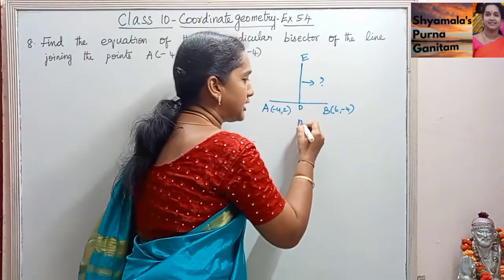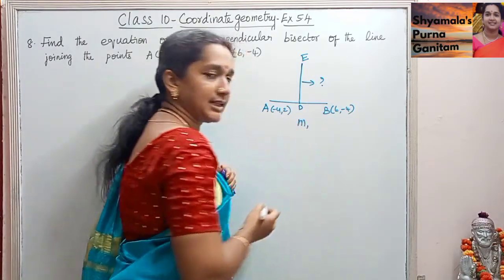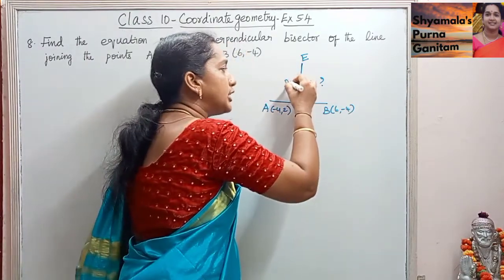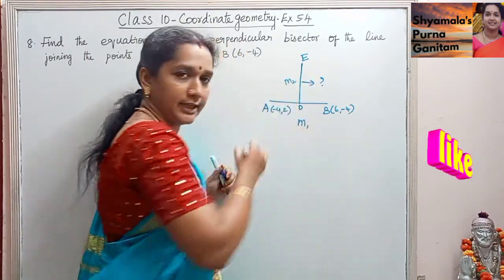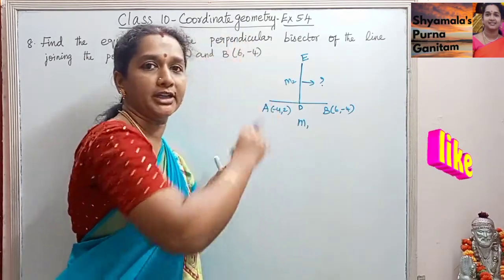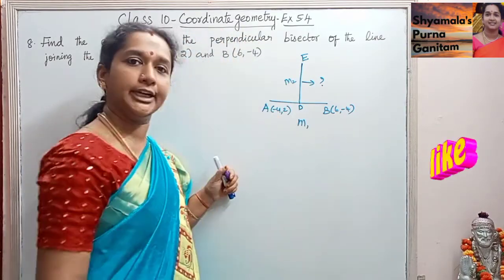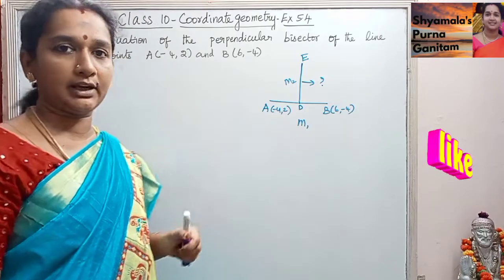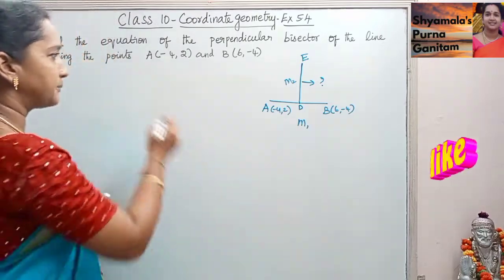If we take the perpendicular bisector as DE, then DE and AB are perpendicular to each other. If we find the slope of AB as M1, then M2 is the slope of DE. We are having a slope and a point, so we will find the equation of this perpendicular line.